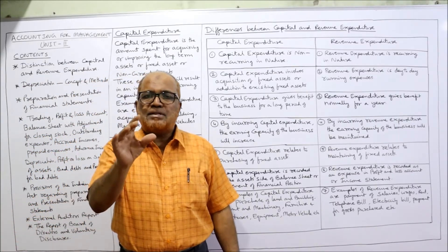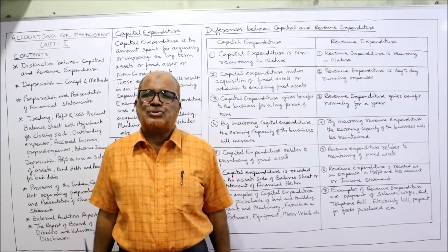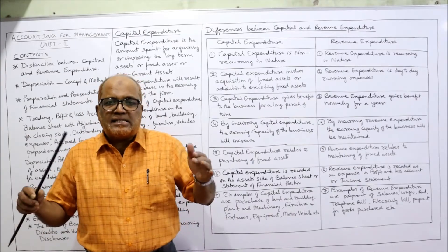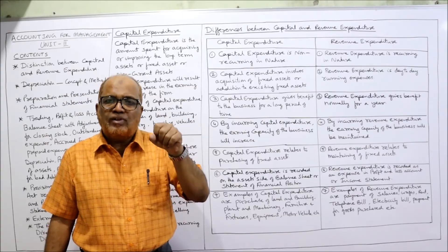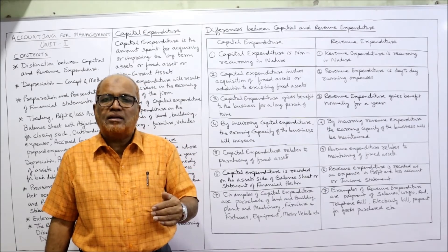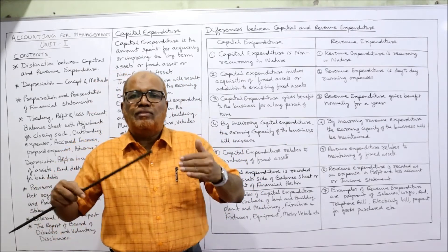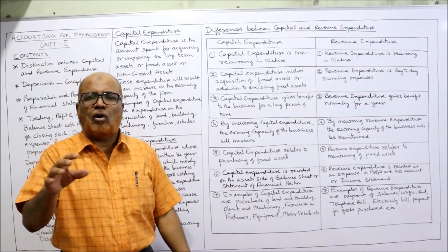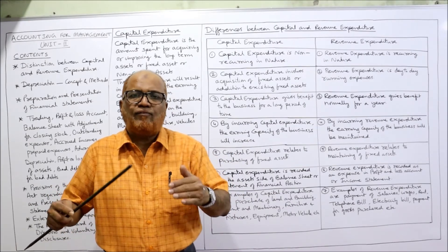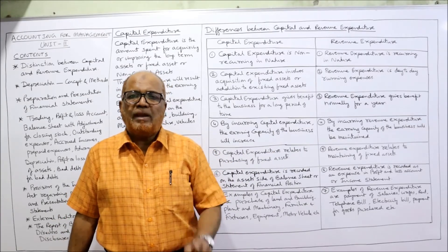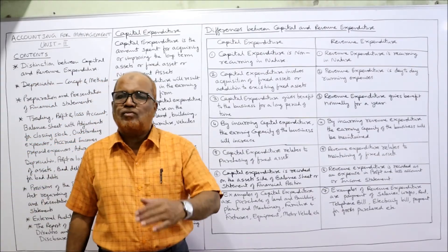Third difference: capital expenditure gives benefit for a long period of time. For example, a machine purchased for ₹10 lakhs with an estimated life of 10 years — we purchase only once but get the benefit for 10 years. Whereas revenue expenditure gives benefit normally for one year only; if we want the benefit next year, we must incur the expense again. Fourth: capital expenditure increases the earning capacity of the business.